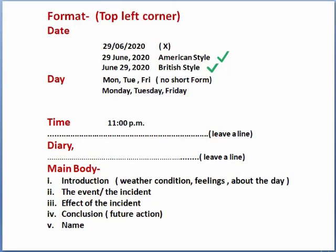After writing the date, you have to write the day. Here also you should be cautious. Suppose the day on which you are writing the diary is Monday — in no case should you write the day in short form like MON. You have to write the day in full form, like Monday. After writing the day, you should write the time. Generally we start writing the diary just before going to bed, so we should write something like 11 PM.